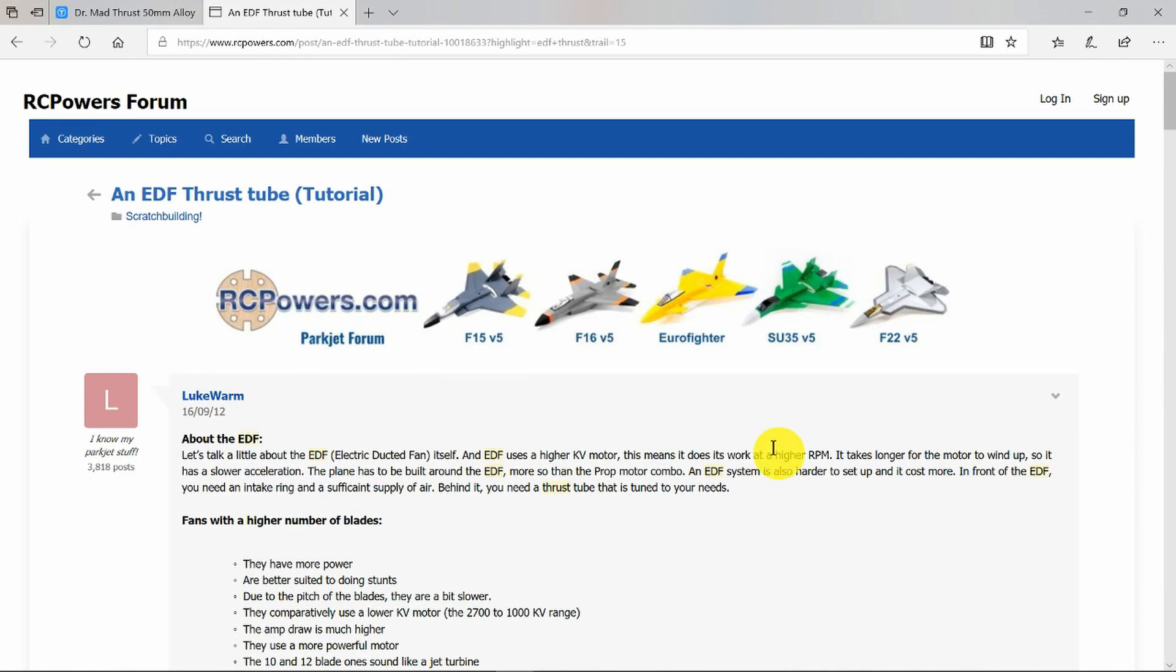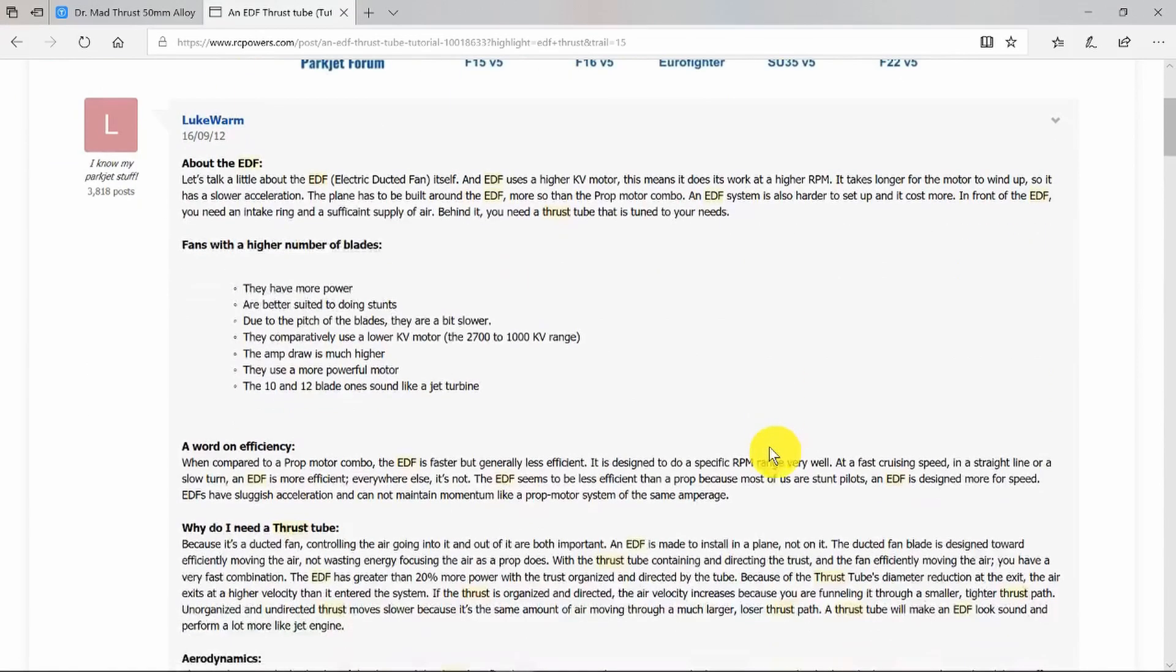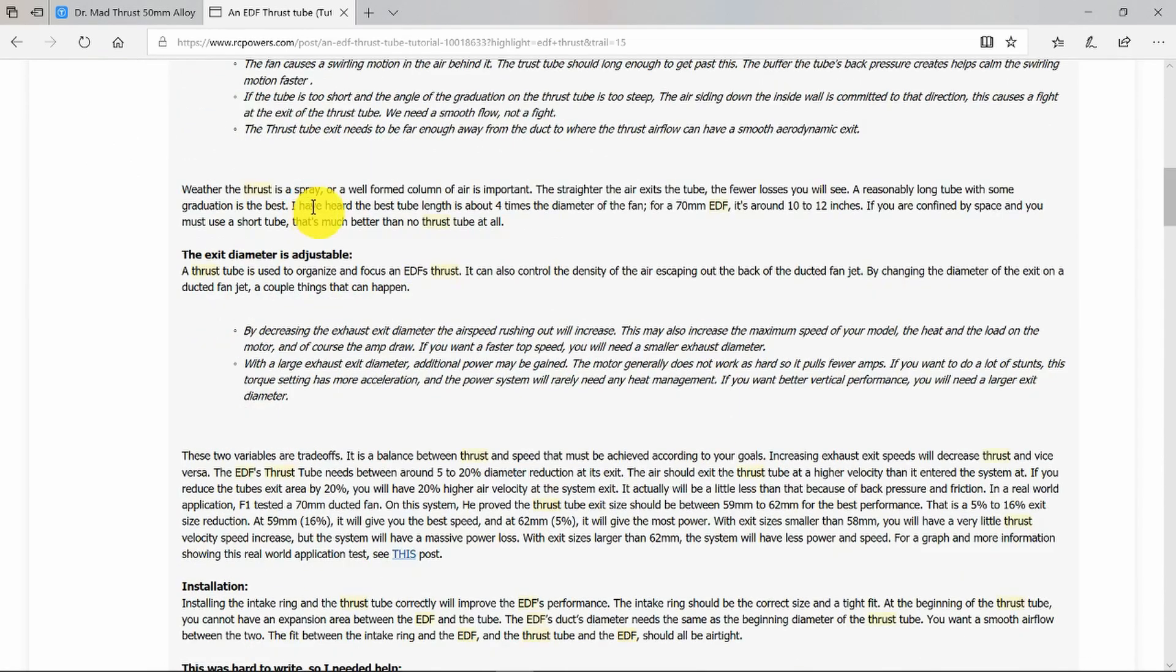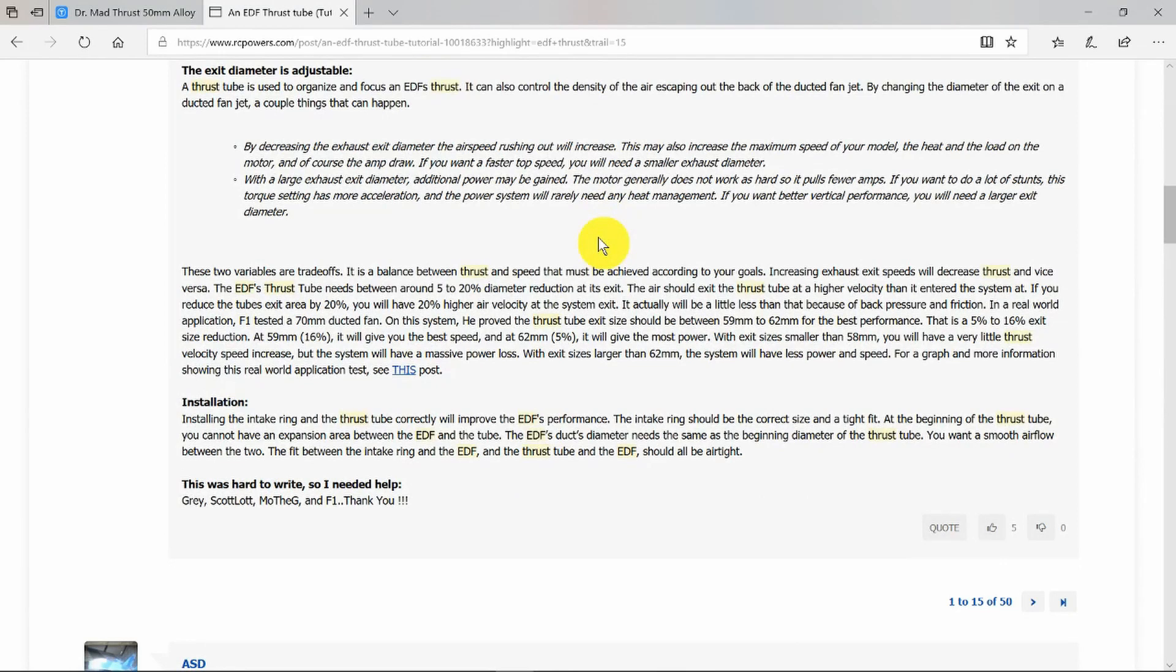What we need to know is the length of the tube. Here it says tube length four times the diameter, so that makes life easy for us - it'll be 200 millimeters long. The inlet diameter is also fairly simple because that's just the size of the fan, so that will be 50 millimeters.